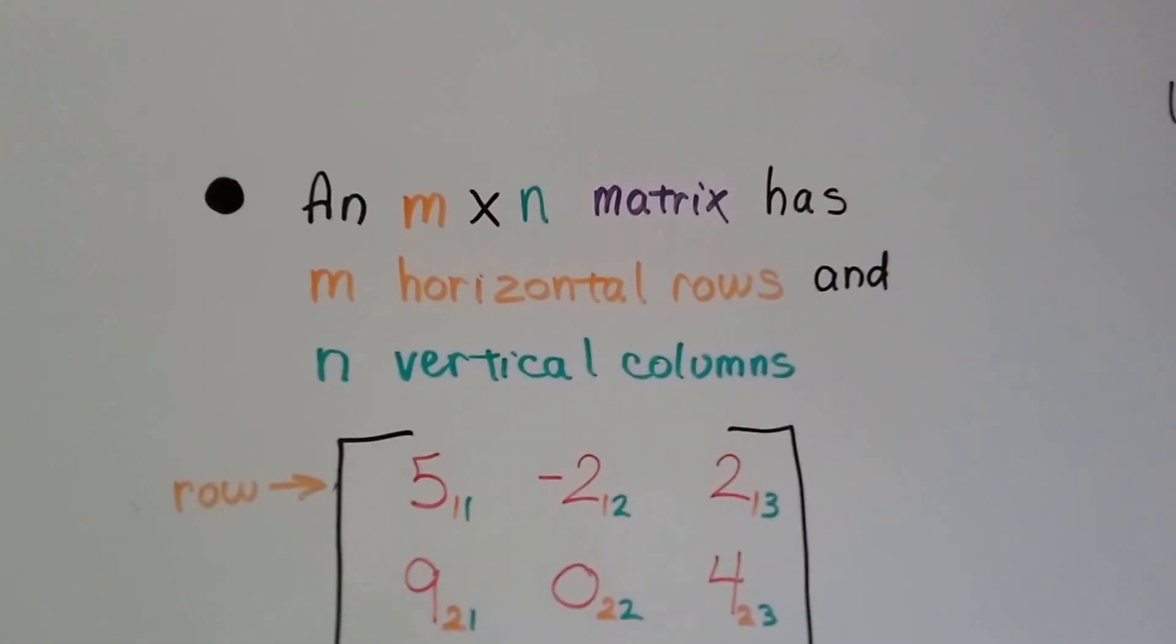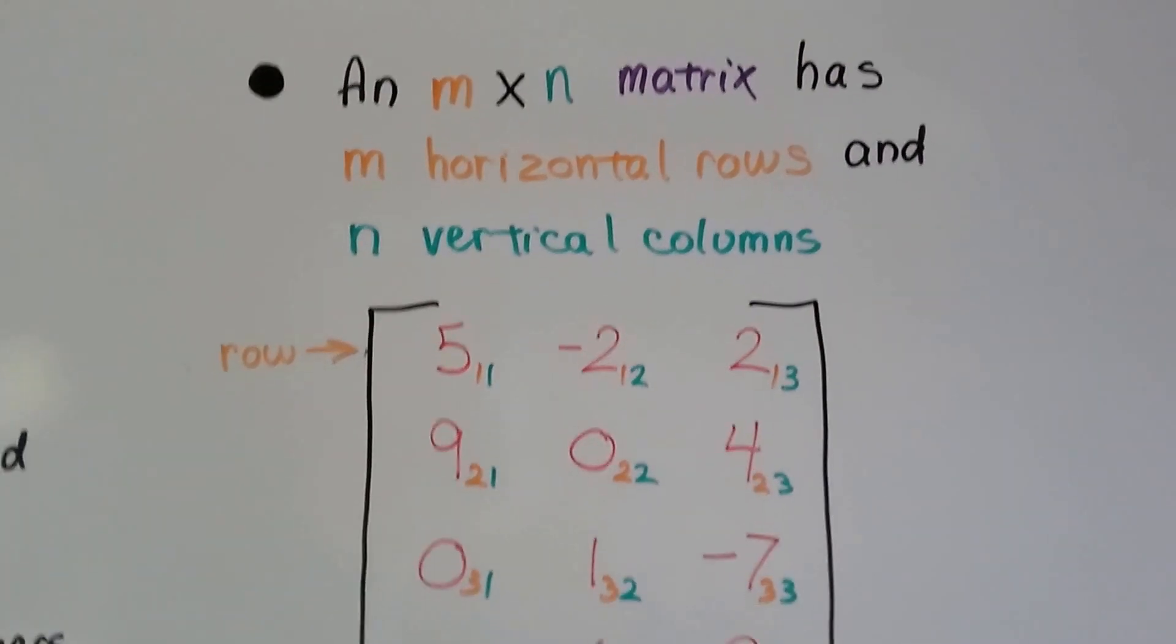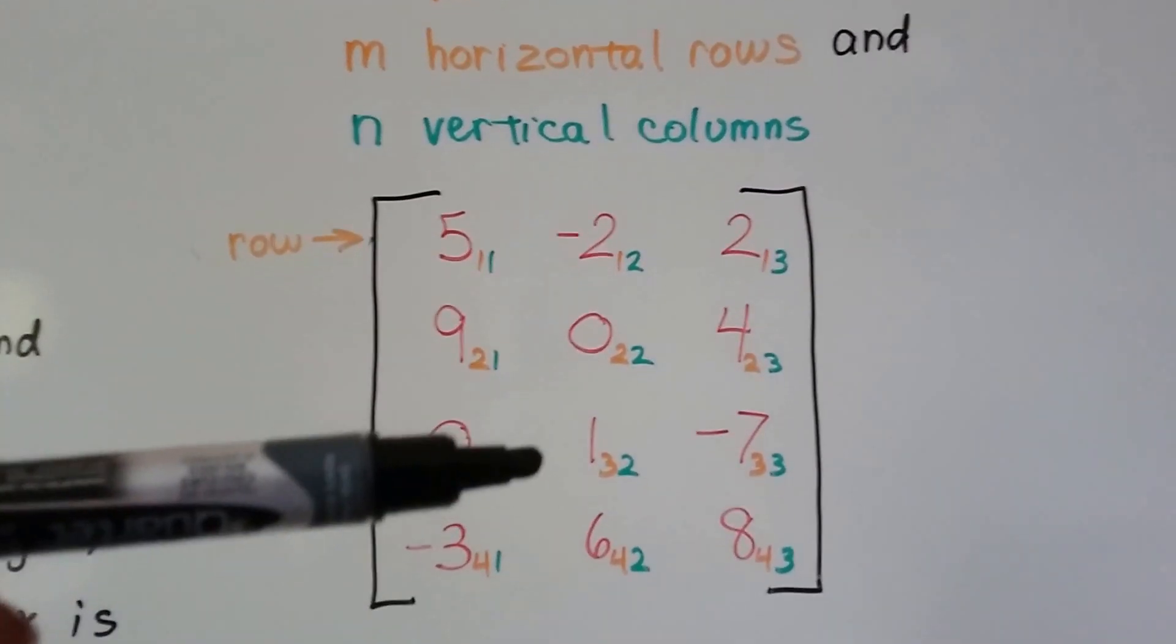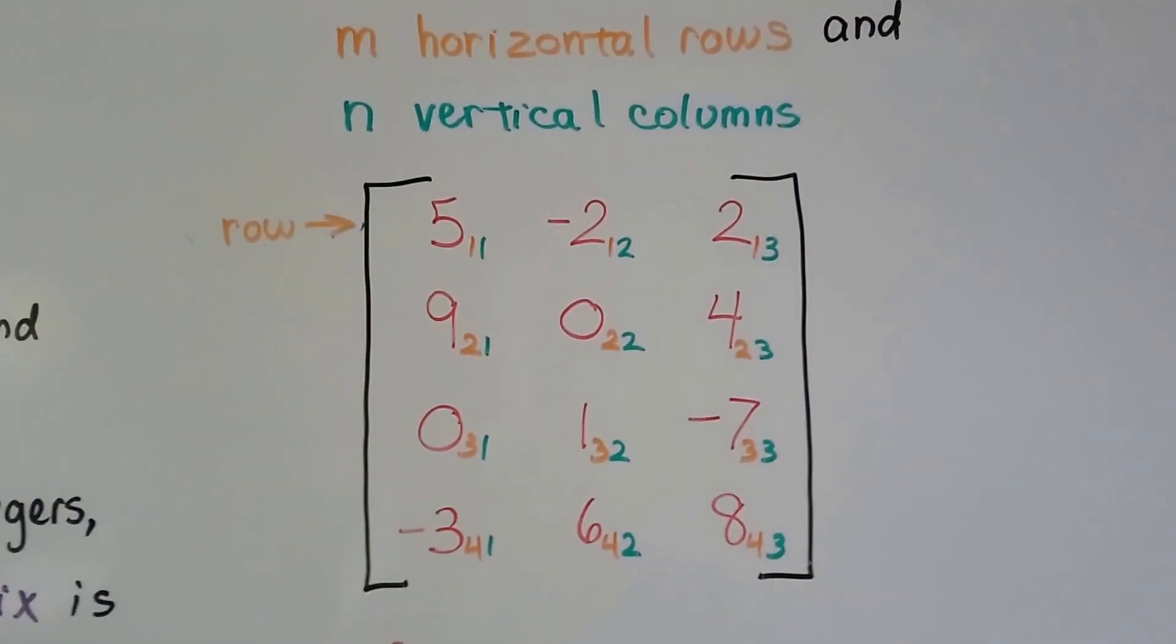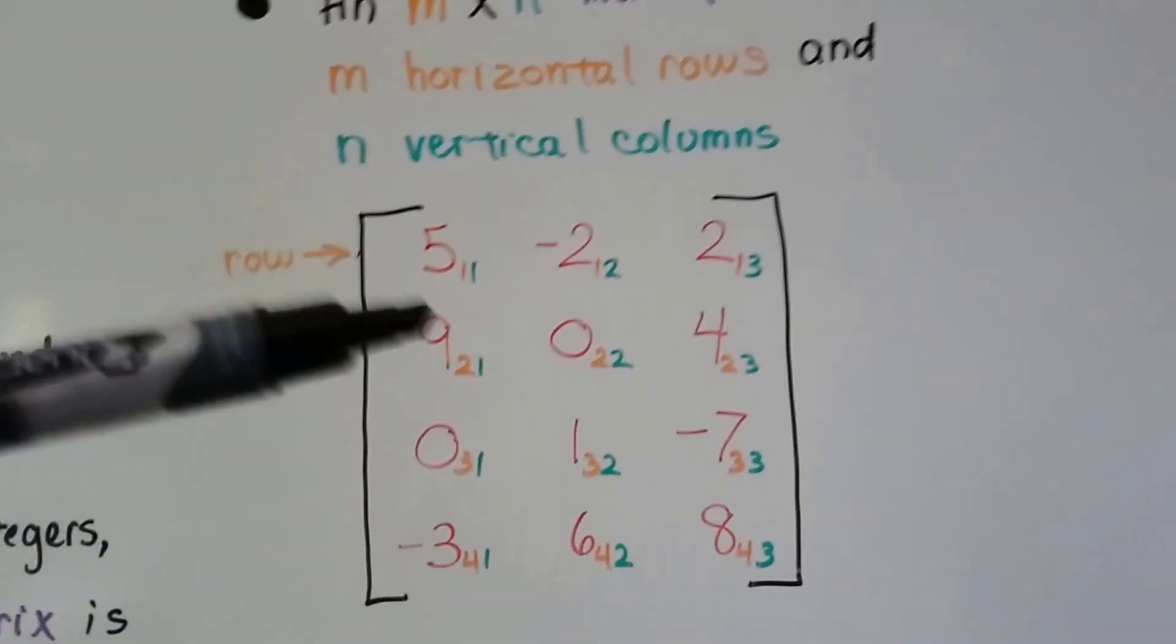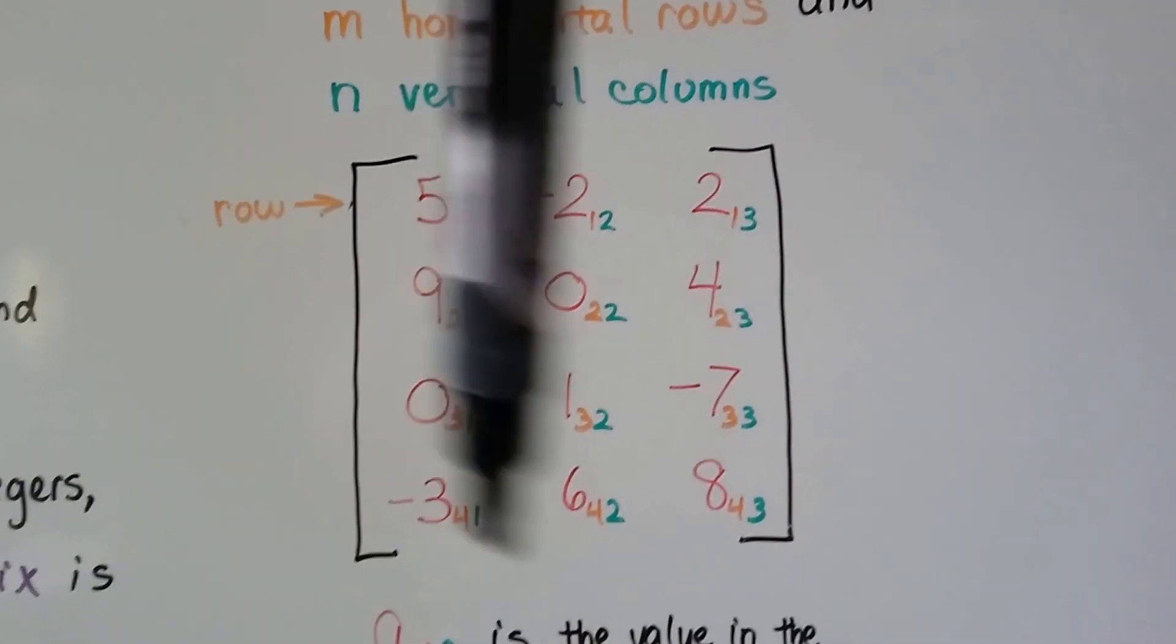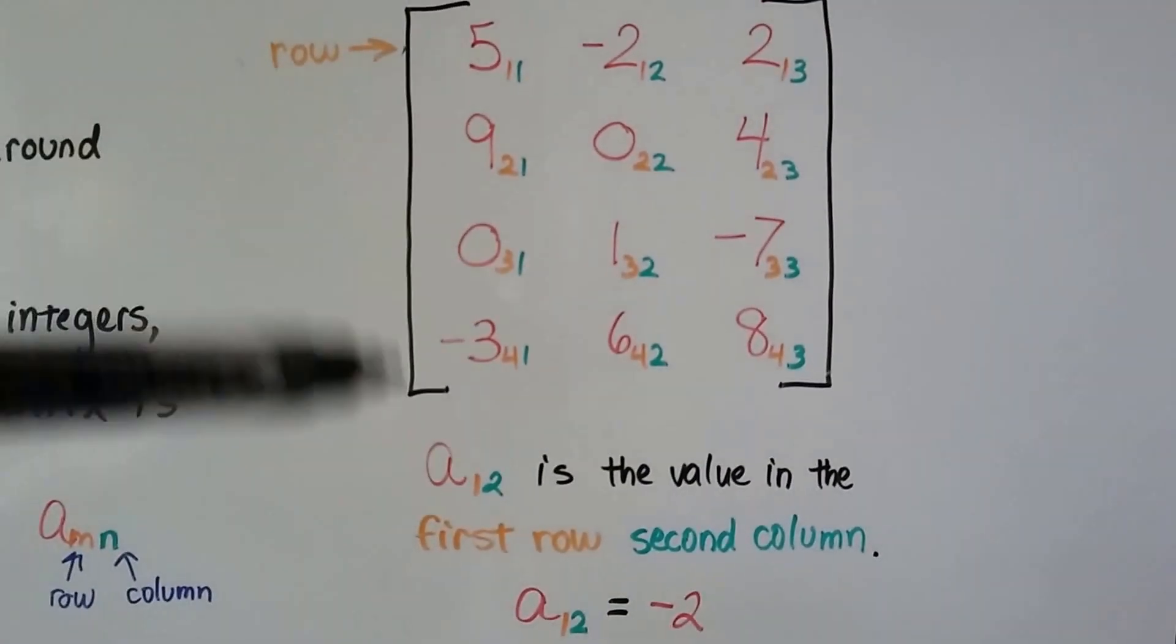An m by n matrix has m horizontal rows and n vertical columns. These are the rows, these are the columns. That's how we do its dimensions, by its rows times columns. There's 4 rows here and 3 columns, so that would be a 4 by 3.